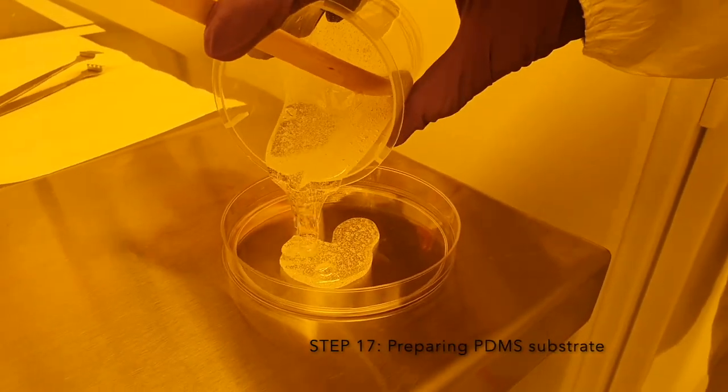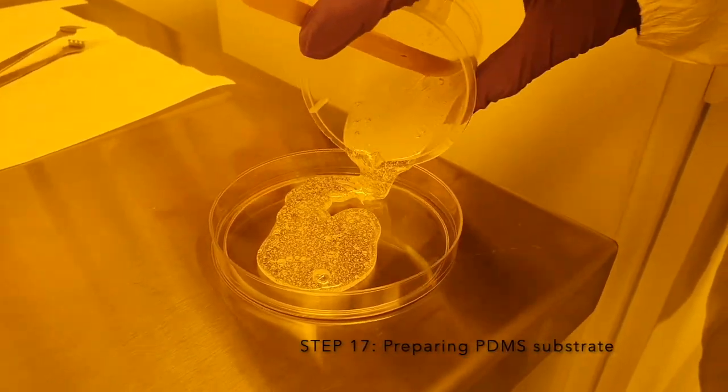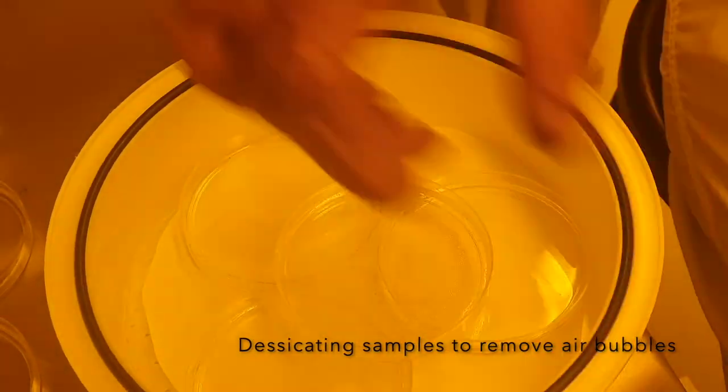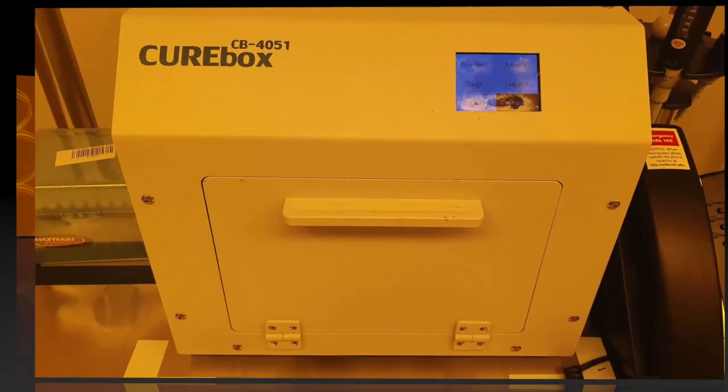Next, we prepared thin PDMS sheets by pouring a pre-measured mixture into a Petri dish, placing it into a vacuum desiccator to suck out bubbles and curing it with a UV chamber.